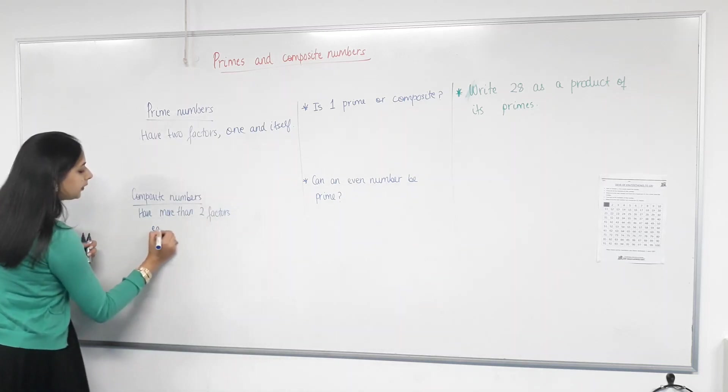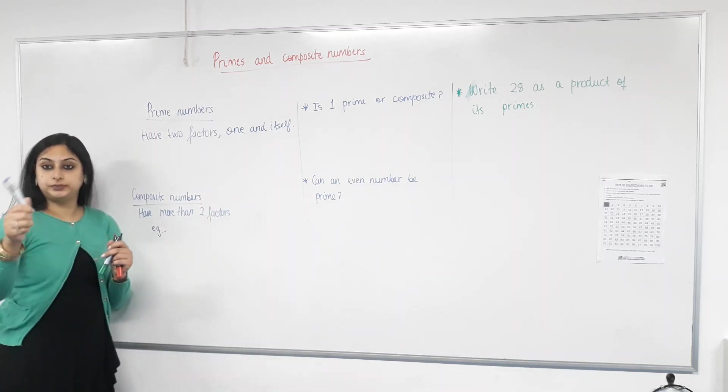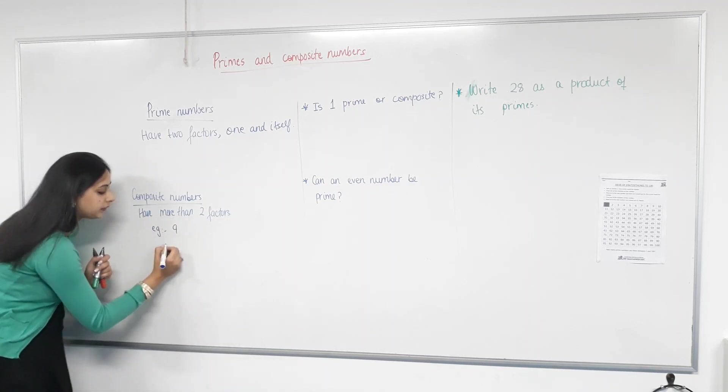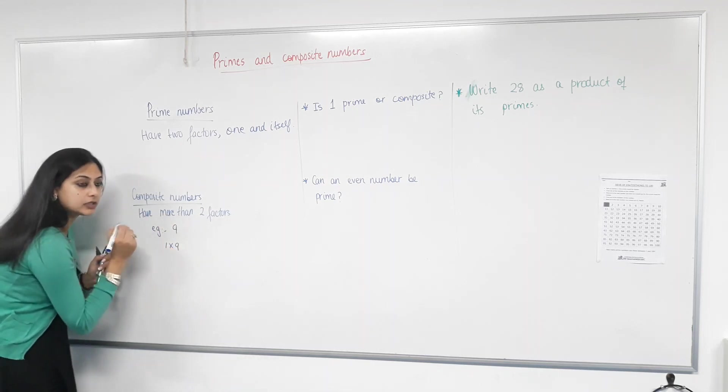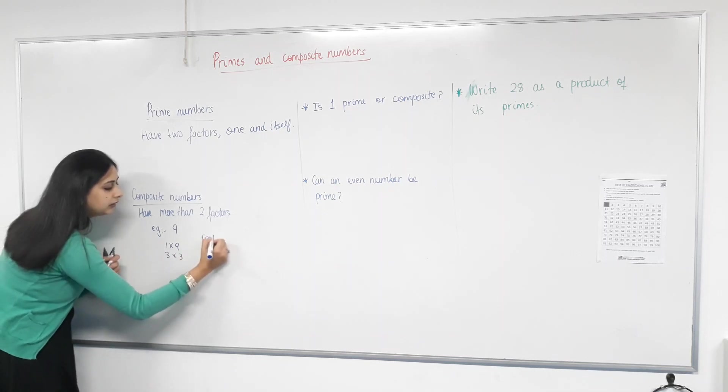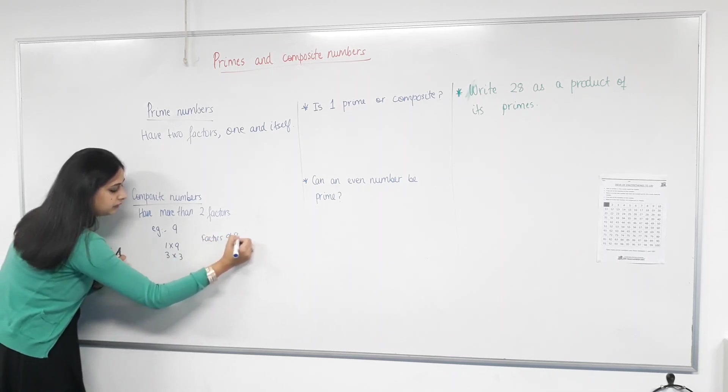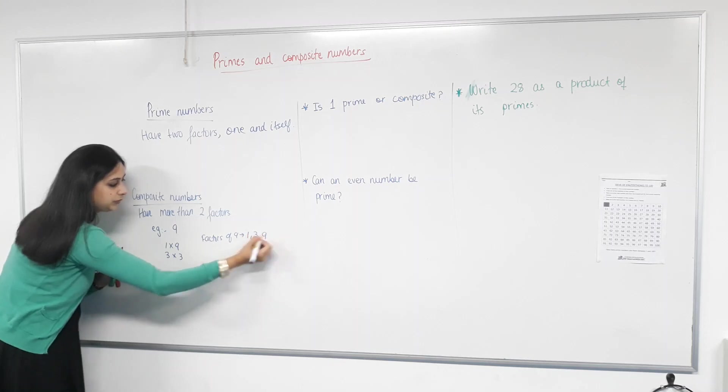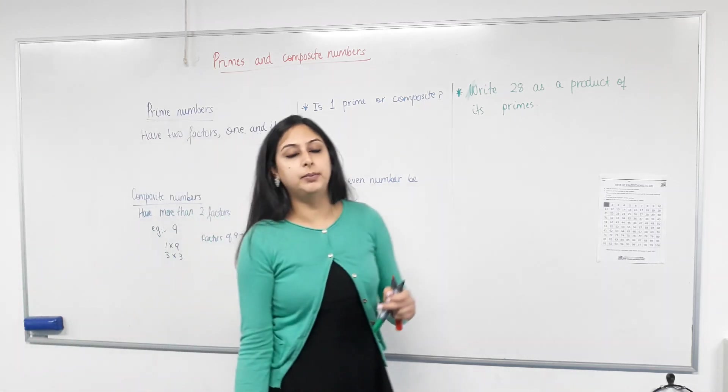Example. Give me an example of a composite number, please. Nine. Nine. What are the factors of nine? How can we write nine? One times nine? Three times three. So, factors of nine are? One, three, and nine. Is that more than two? Yes. So, nine is a composite number.